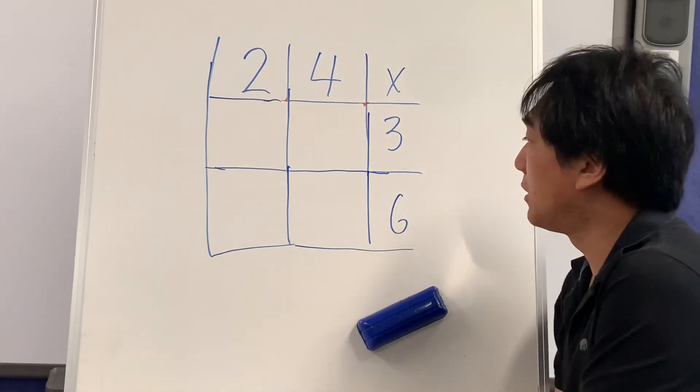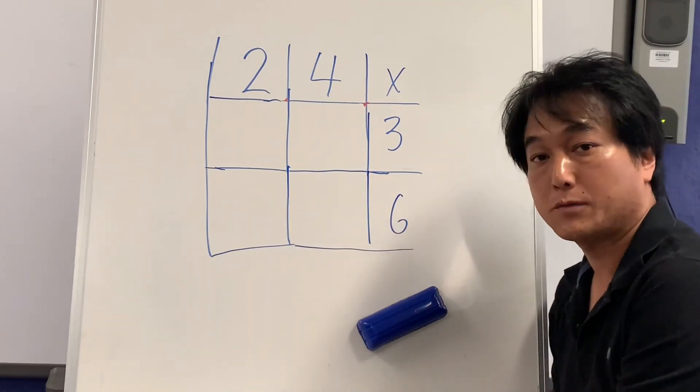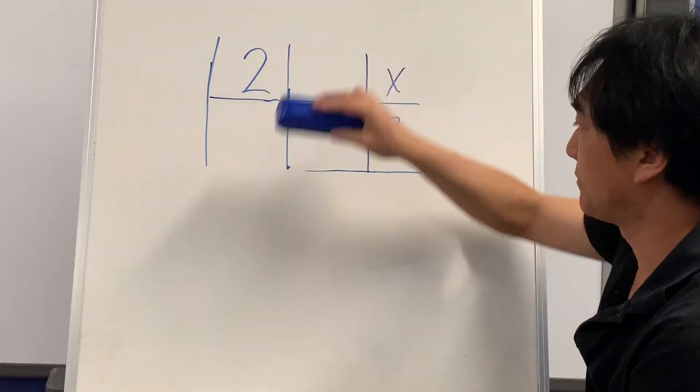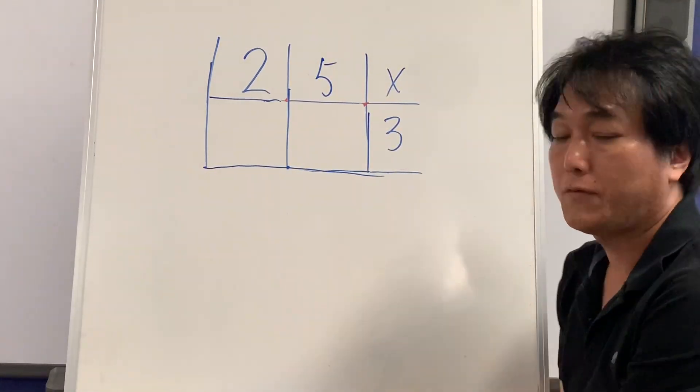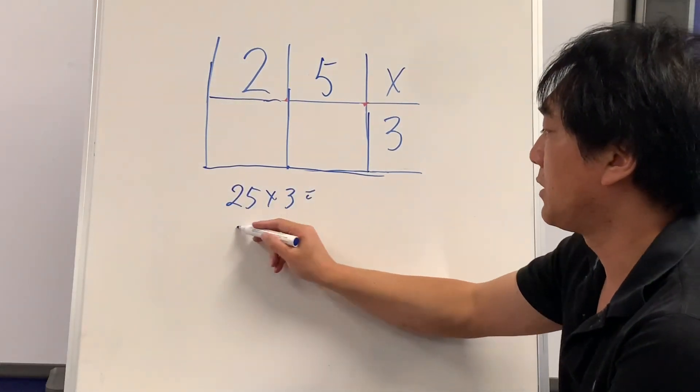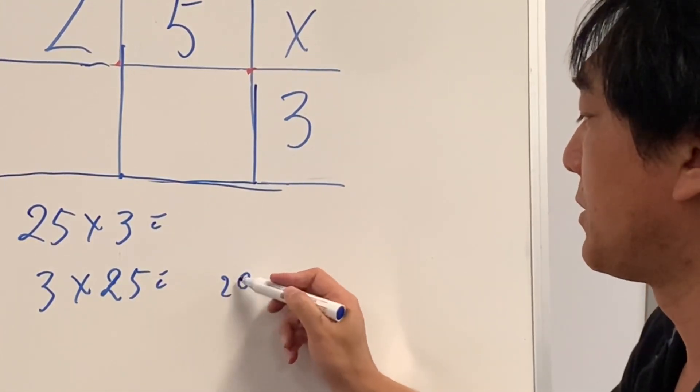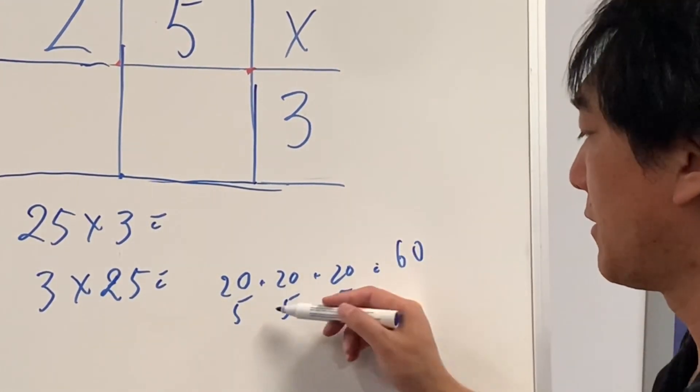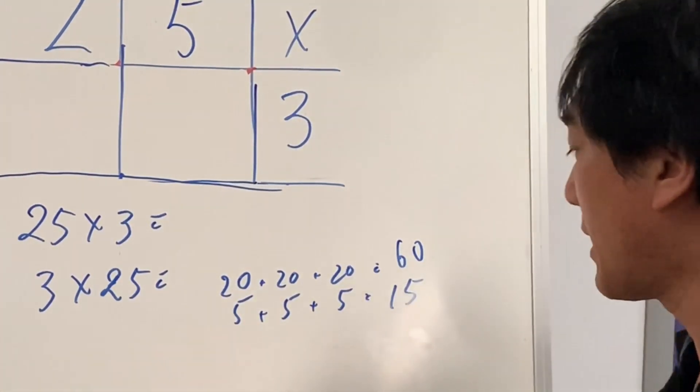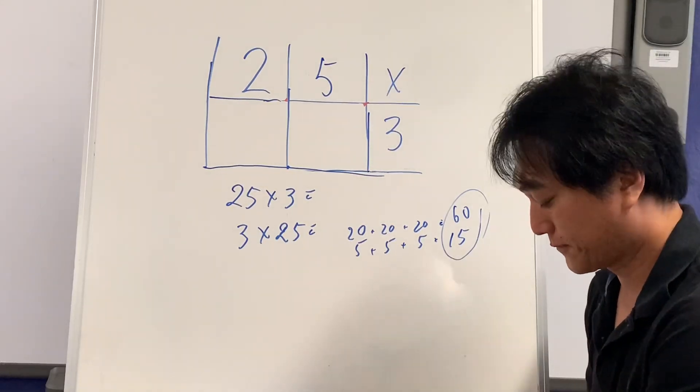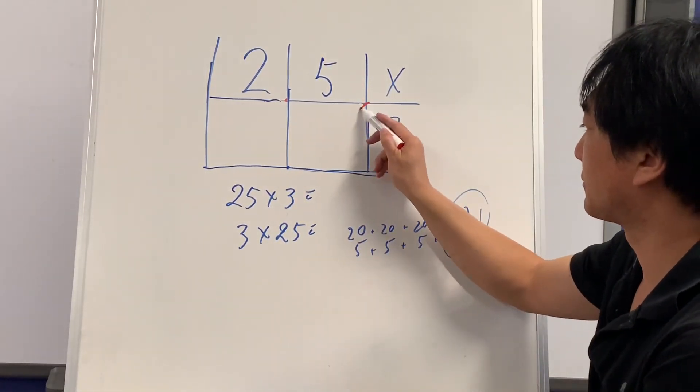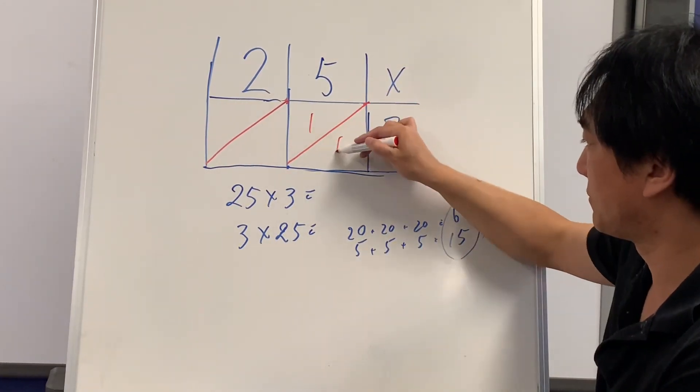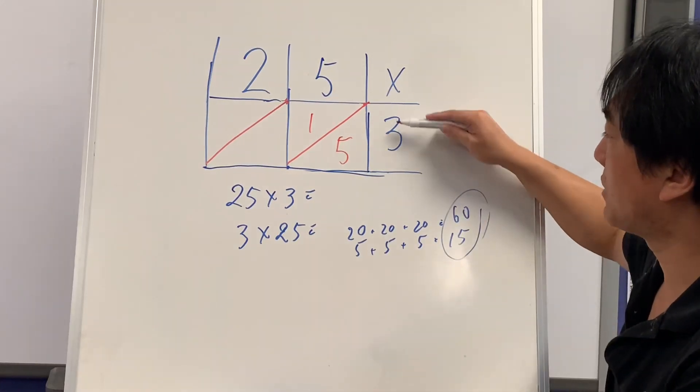How does this work? Let's try 25 times 3. We've done 25 times 3 before. It's exactly the same as 3 times 25: 25, 25, 25. 3 lots of 20 is 60, 3 lots of 5 is 15, so answer is 75. Do you remember that? Let's see what's happening here. 3 times 5 is 15, 3 times 2 is 6.